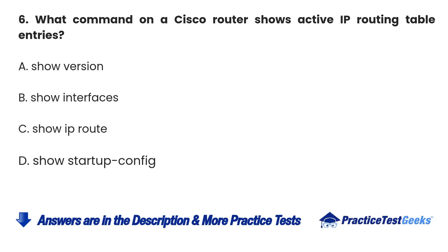Question 6: What command on a Cisco router shows active IP routing table entries? A. Show version. B. Show interfaces. C. Show IP route. D. Show startup config.